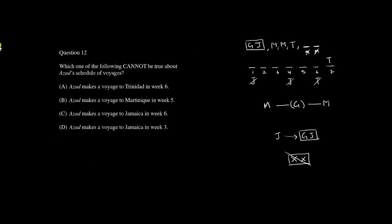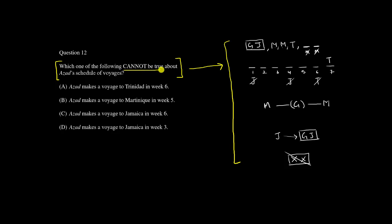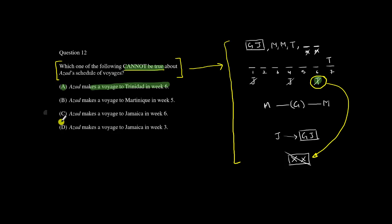Question 12 asks: which of the following cannot be true about Azad's schedule of voyages? This question gives no additional information, asking us based only on our original inferences — I call this a global question. One inference we made is that position six cannot be T, since that would violate the rule that no two destinations can be consecutive, and position seven is already T. Answer choice A says Azad makes a voyage to Trinidad in week six — that's a violation, so since we're looking for cannot be true, that is the answer.